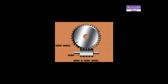Worm is a screw-like member and the wheel is a helical gear. The action of the gearing is very similar to that between a screw and a nut. Hence, the drive is also known as screw gearing.